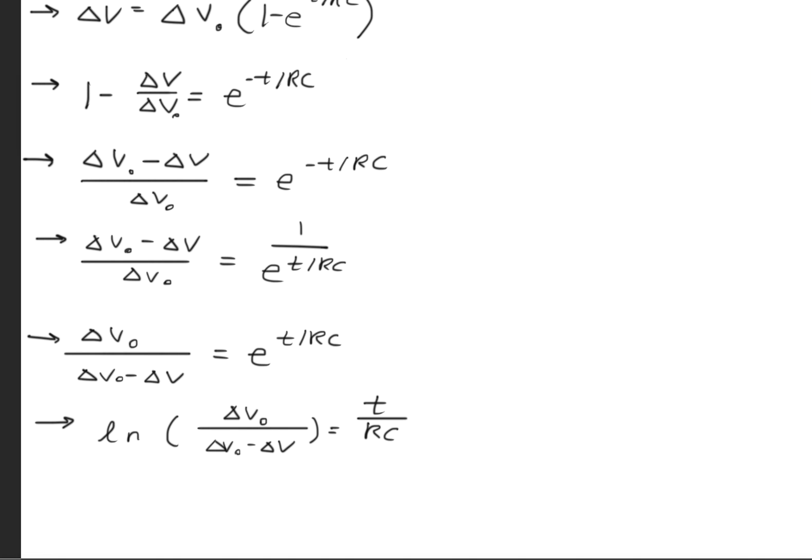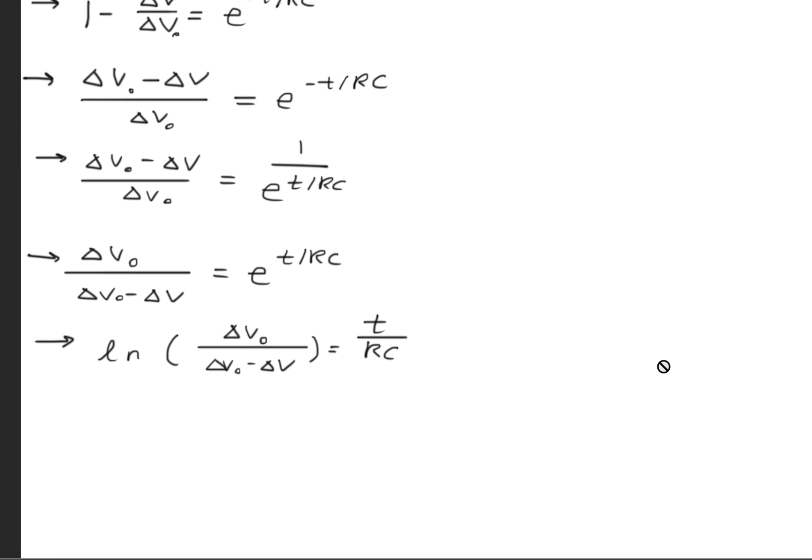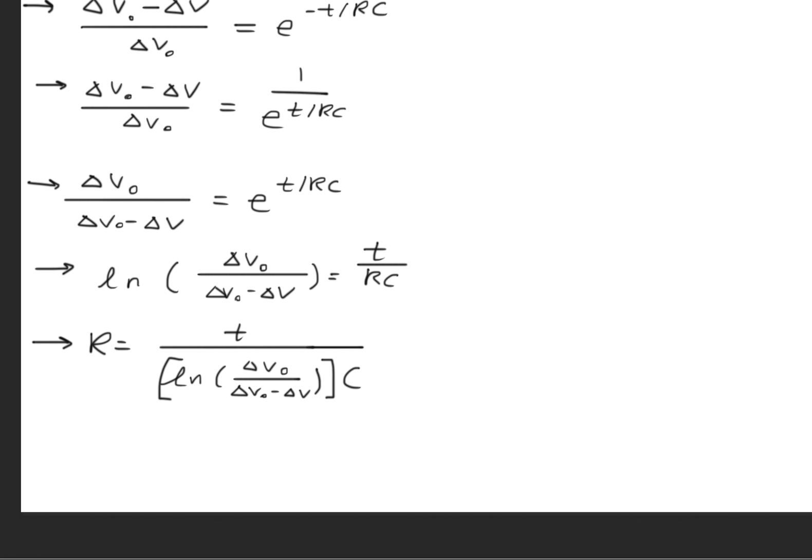Then to get rid of the exponential, we'll take the natural logarithm on both sides. Afterwards, we'll isolate the resistance and solve for the R variable.